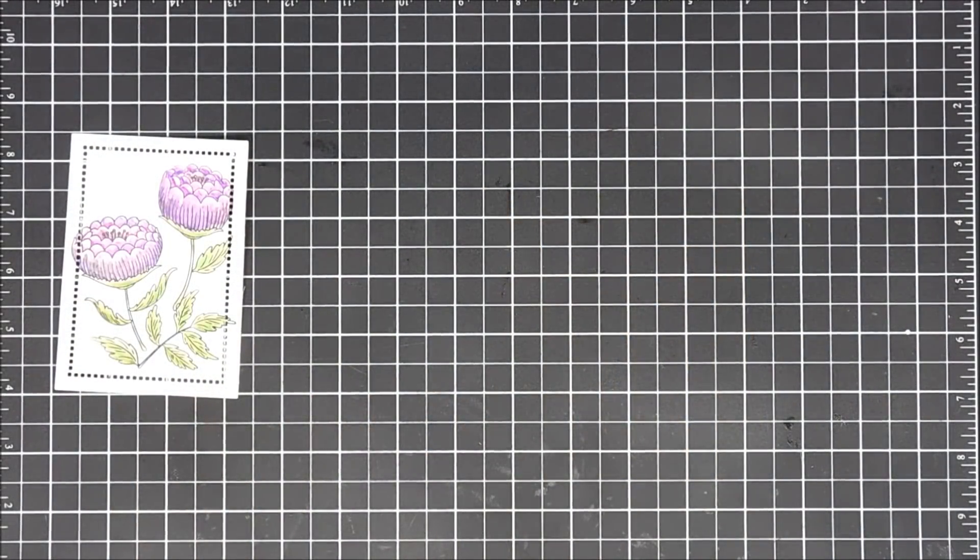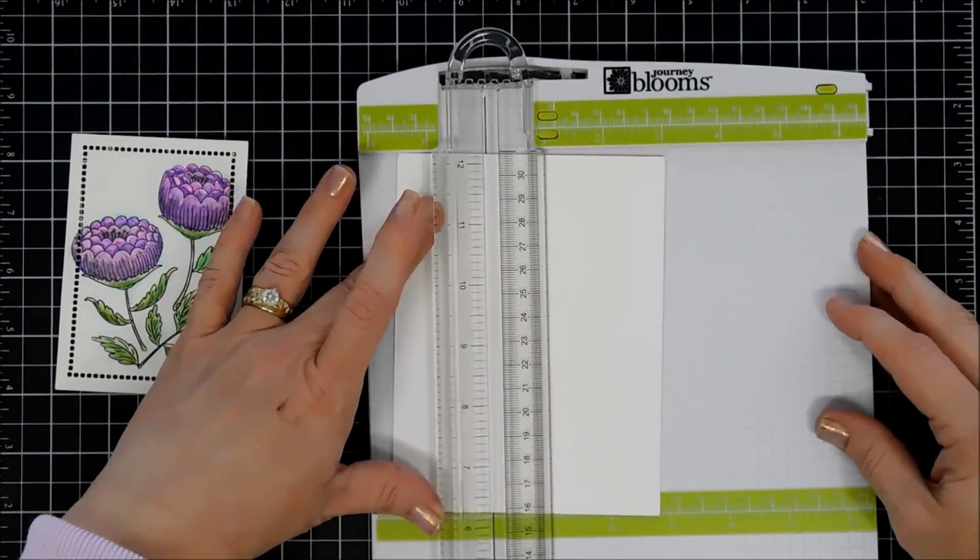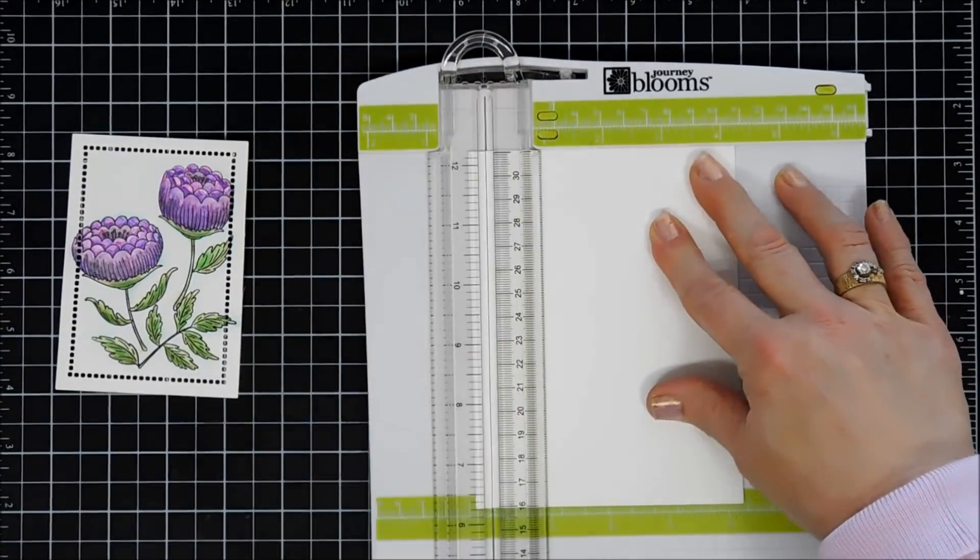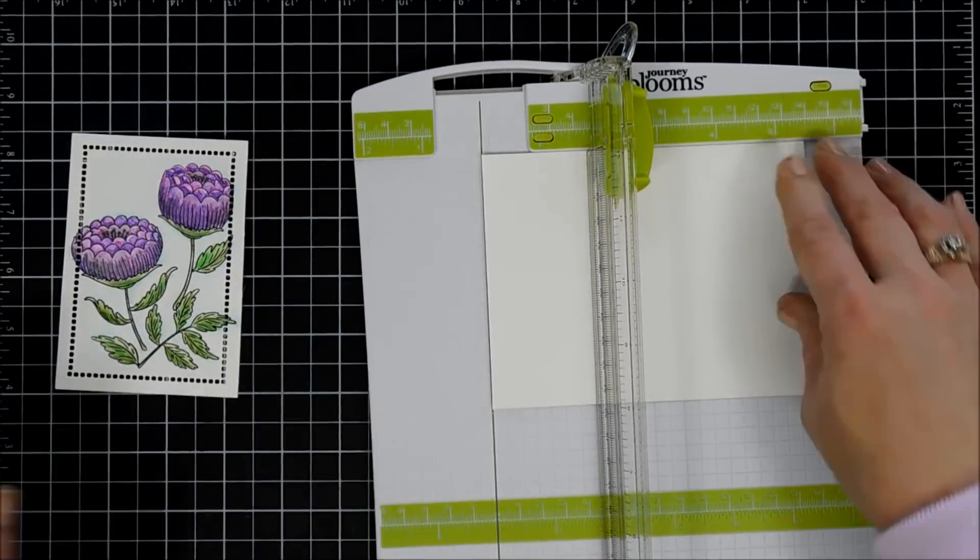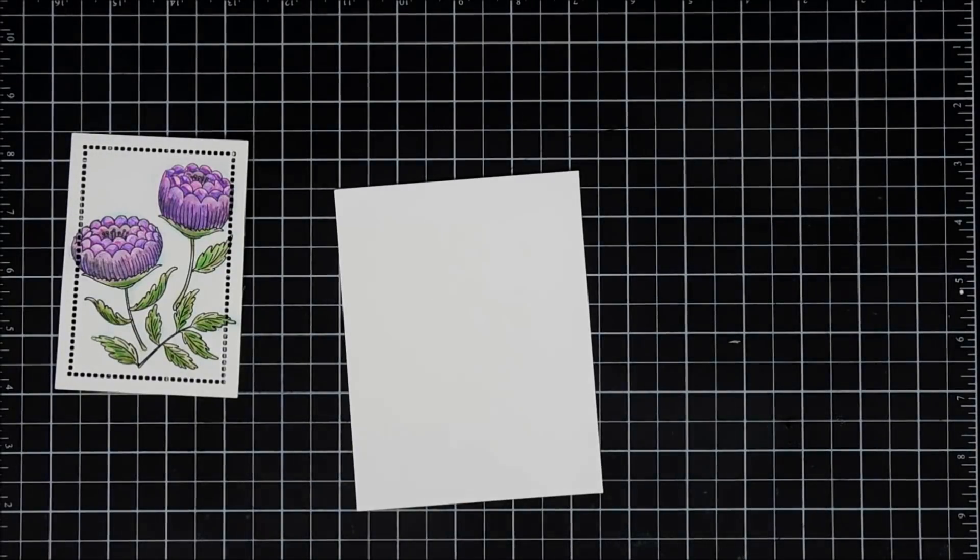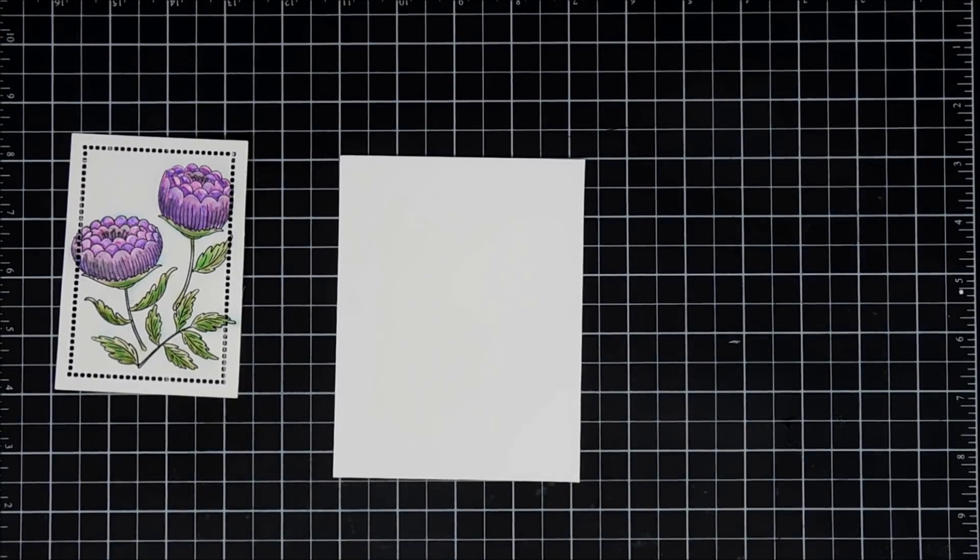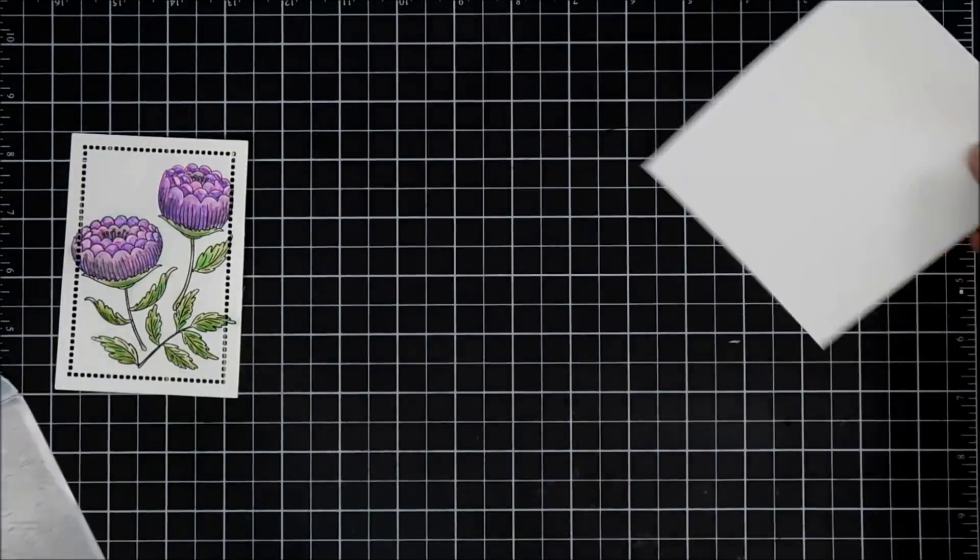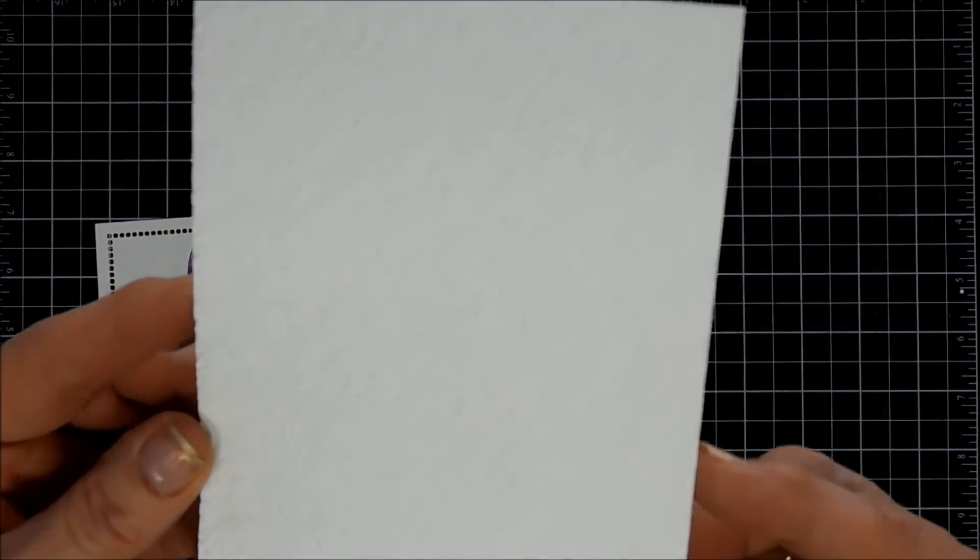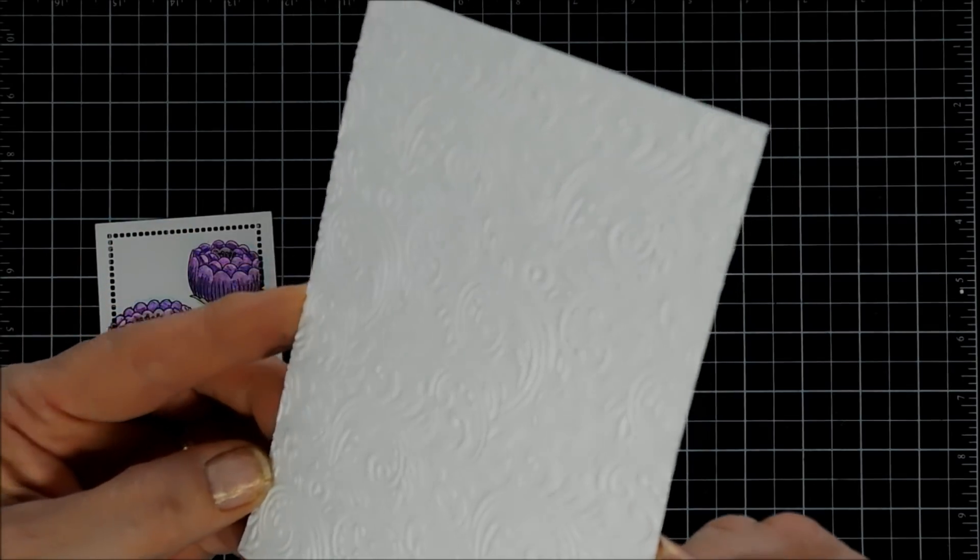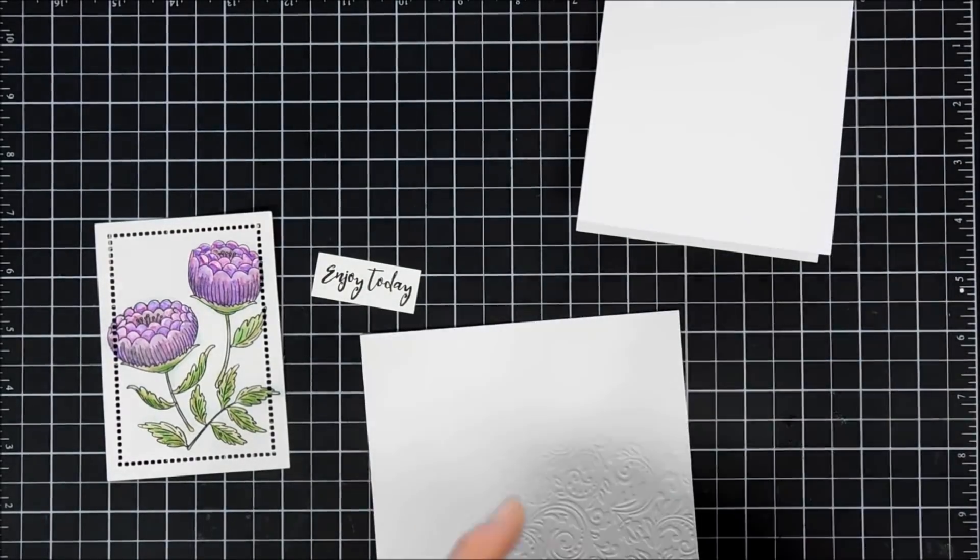Next, I wanted to use an embossing folder, but I wanted the same color as my panel here. This is watercolor cardstock. I'm trimming it down to 4 1/4 inches by 5 1/2 inches, so it's a complete size of a card front. I'm going to use an embossing folder that I've had in my stash. It's got some beautiful floral swirls on there, very elegant. I ran that through my Platinum 6 machine and embossed my panel.